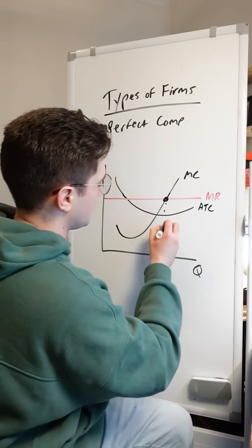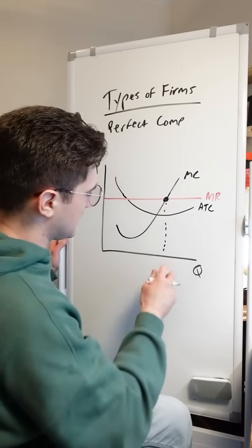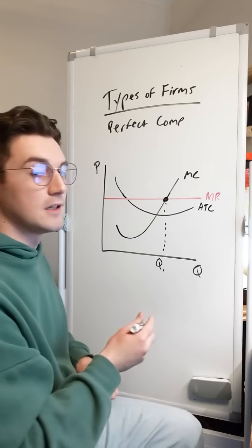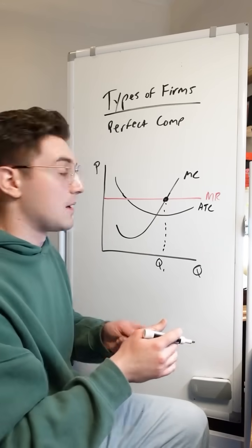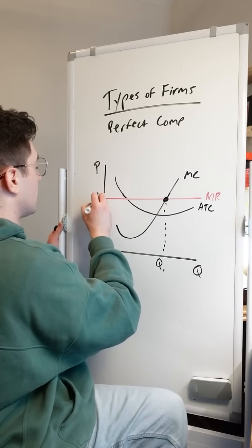In terms of price and quantity, we find the quantity of units just by going down and seeing, we'll call it Q1 here on the x-axis right below that point. And the price, it's a little bit easier for perfect competition. It's just where the MR lies.